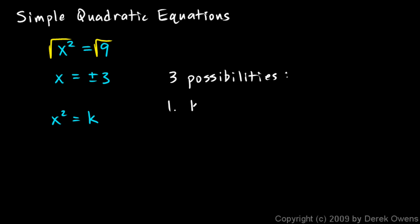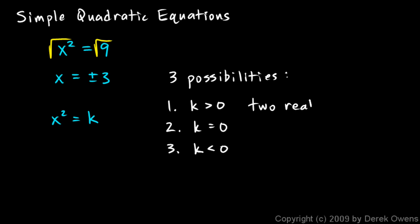Three possibilities. One: k is greater than zero. Two: k is equal to zero. Three: k is less than zero. Those are the only possibilities — x squared equals something, and that something has to be positive, negative, or zero. If it's positive, like we had here, we get two real number solutions — positive three and negative three.